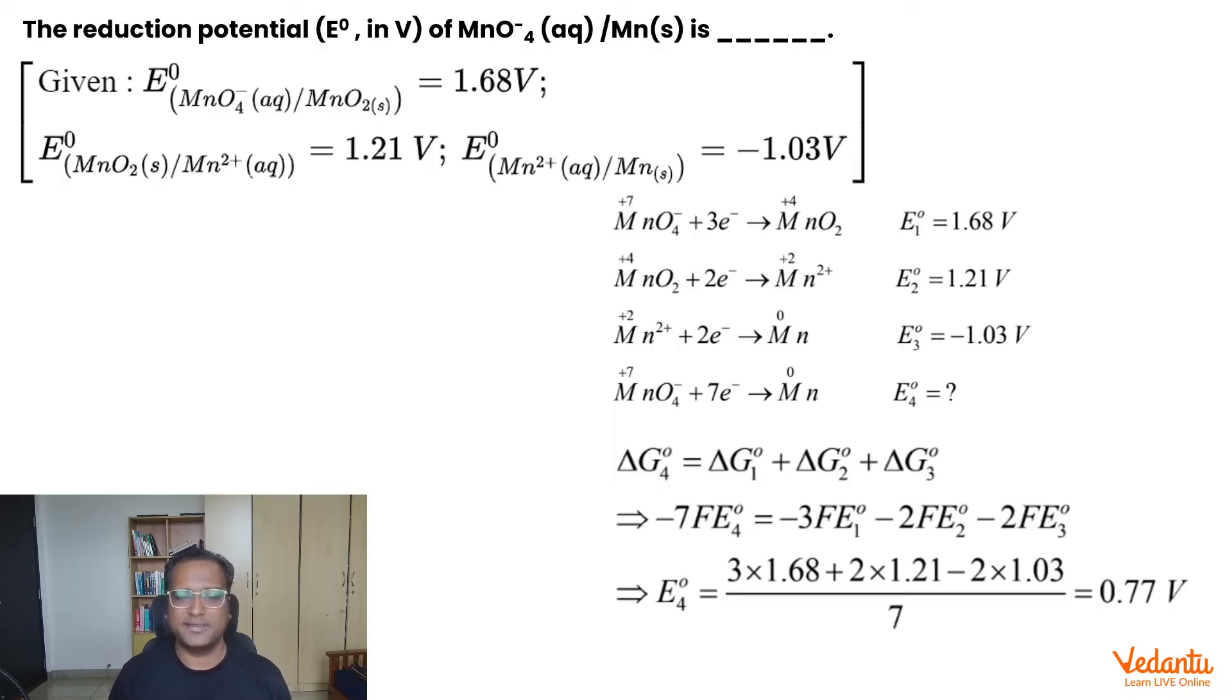Out of that, we are going to discuss the second one. Now, the question says we have to calculate this electrode potential, that's MnO4- going to manganese. That is this reaction. MnO4- takes up 7 electrons, goes to manganese, and we are supposed to find the electrode potential here.